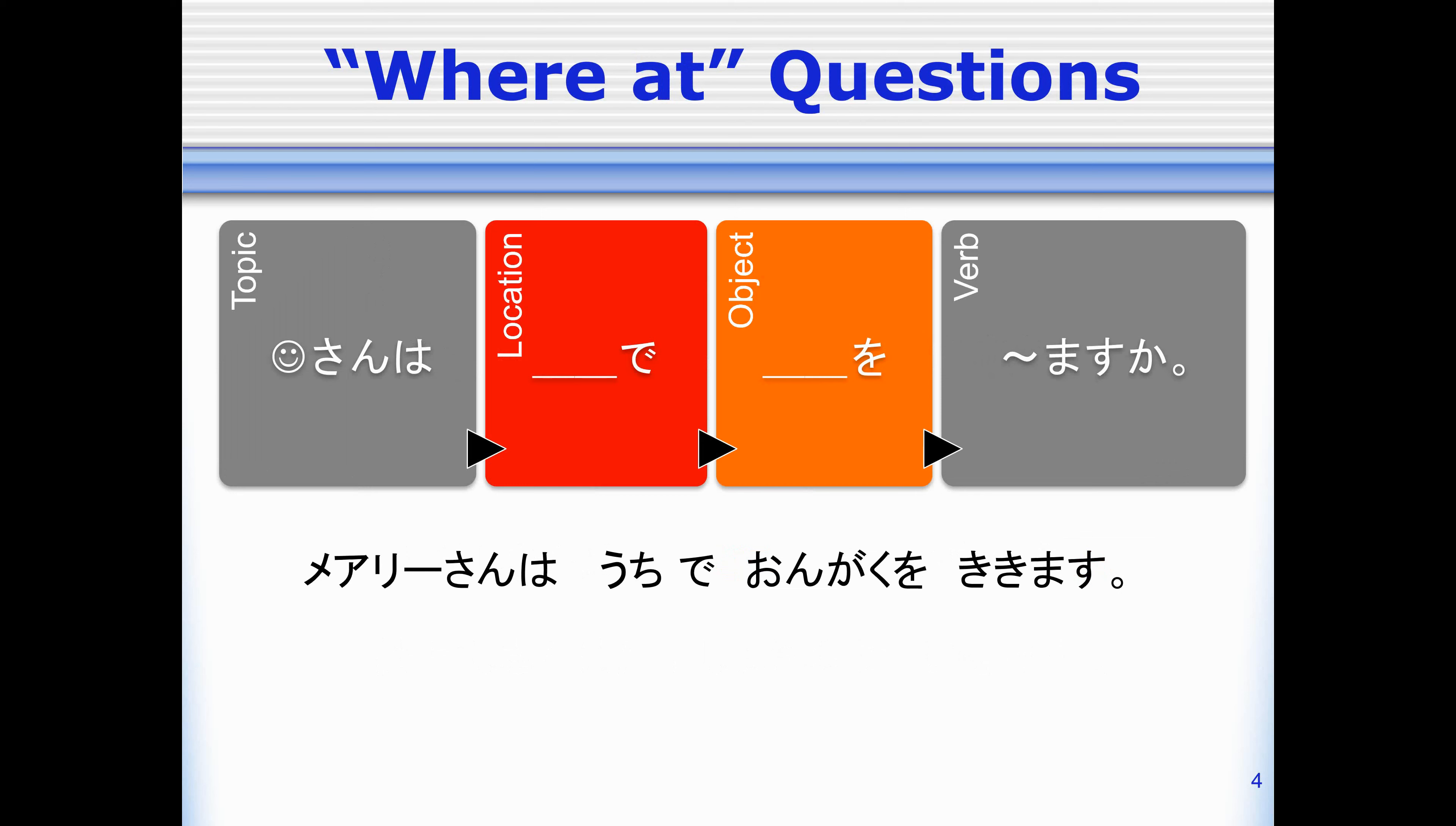It'll work the same way if I want to ask questions about where someone does something at, so if I want to ask about the location. In a normal sentence we have topic wa, location de, object wo, and then the verb. So for instance, Mary-san wa uchi de ongaku wo kikimasu.